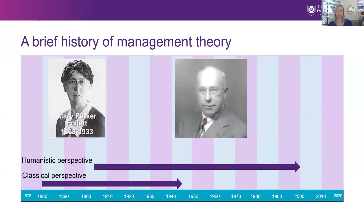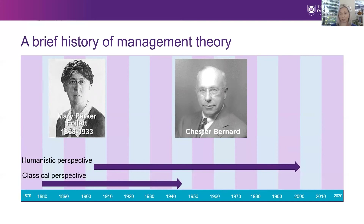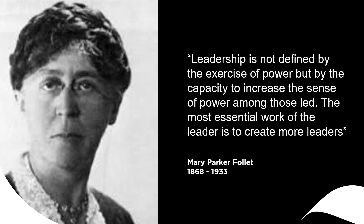The humanistic perspective on management emphasizes the importance of understanding human behaviors, needs, and attitudes in the workplace, as well as social interactions and group processes. There are three primary subfields: the human relations movement, the human resources perspective, and the behavioral sciences approach. Two early advocates of a more humanistic approach were Mary Parker Follett and Chester Bernard. Follett was trained in philosophy and political science but applied herself in social psychology and management. Her work was popular with business people of her day but was often overlooked by management scholars.